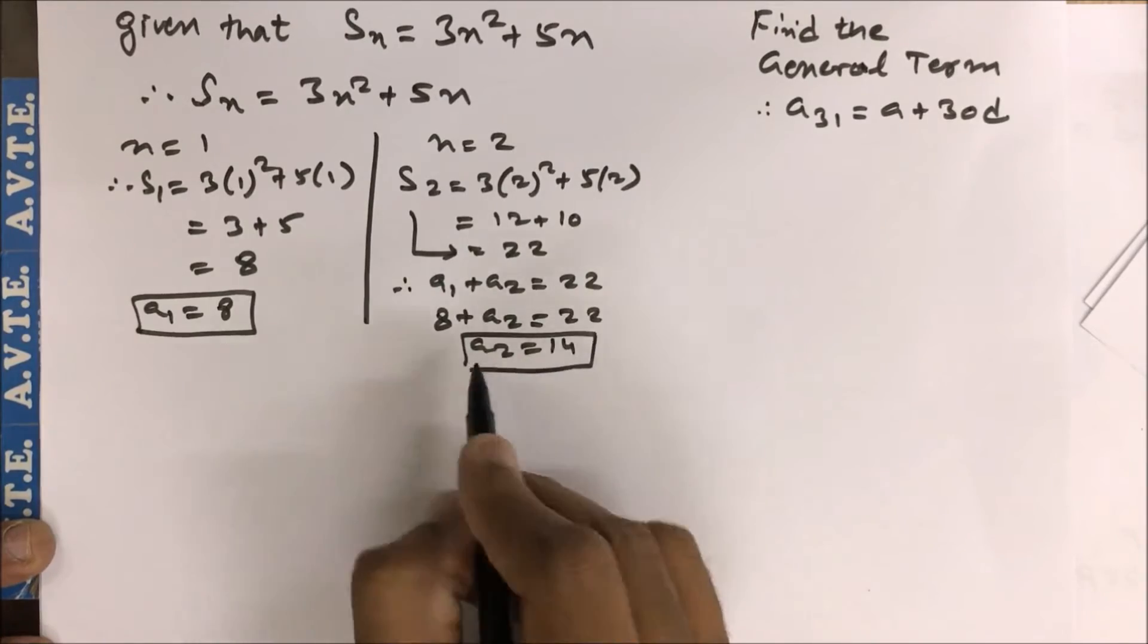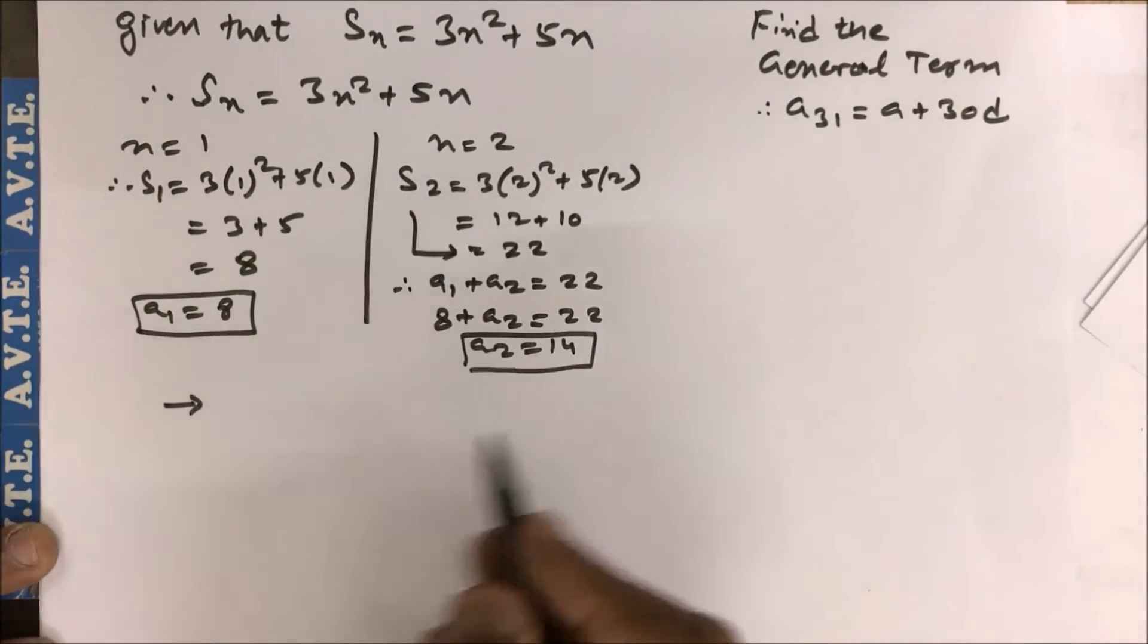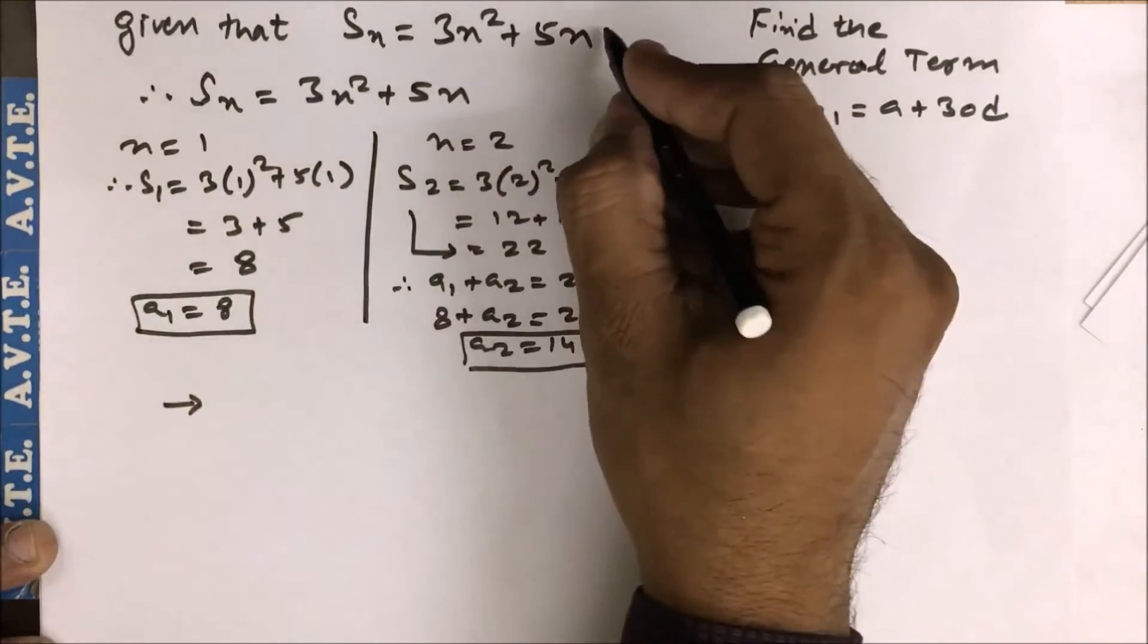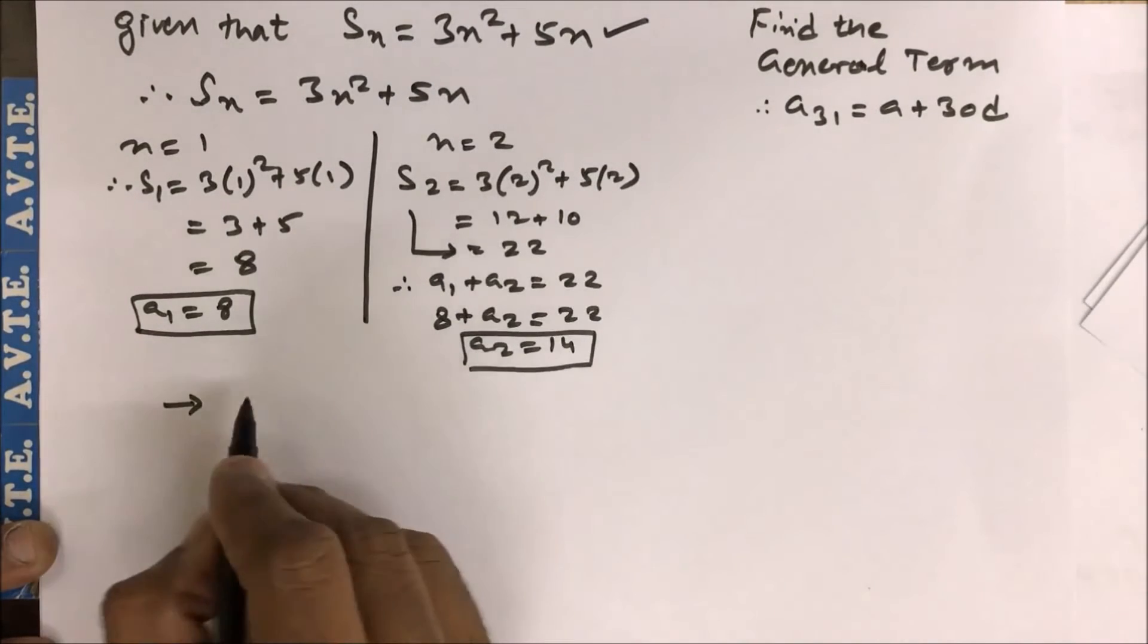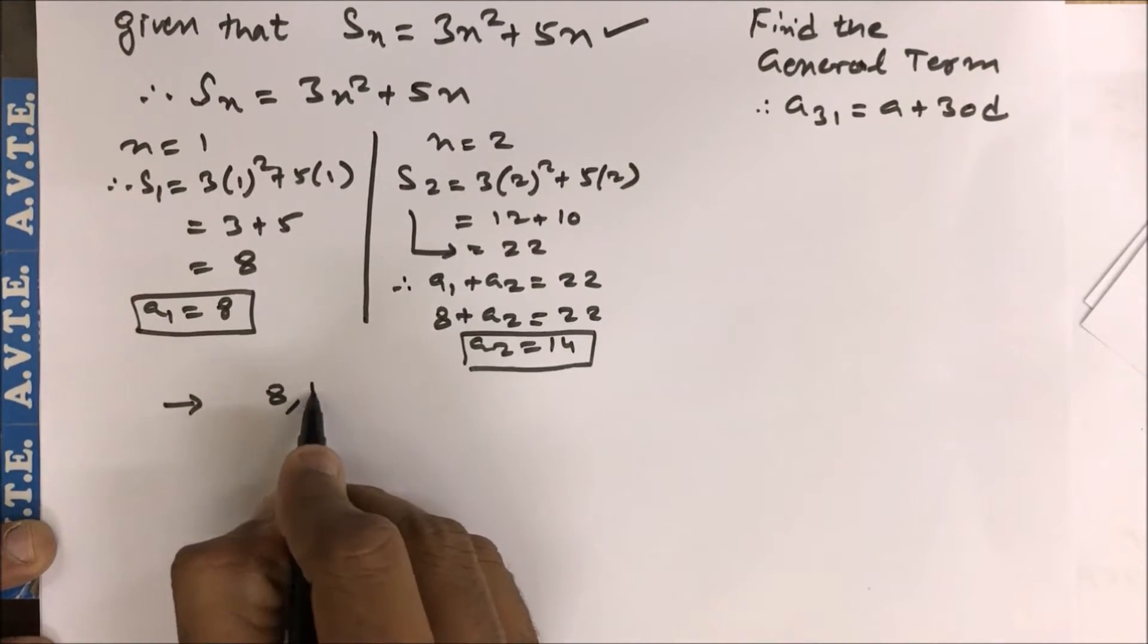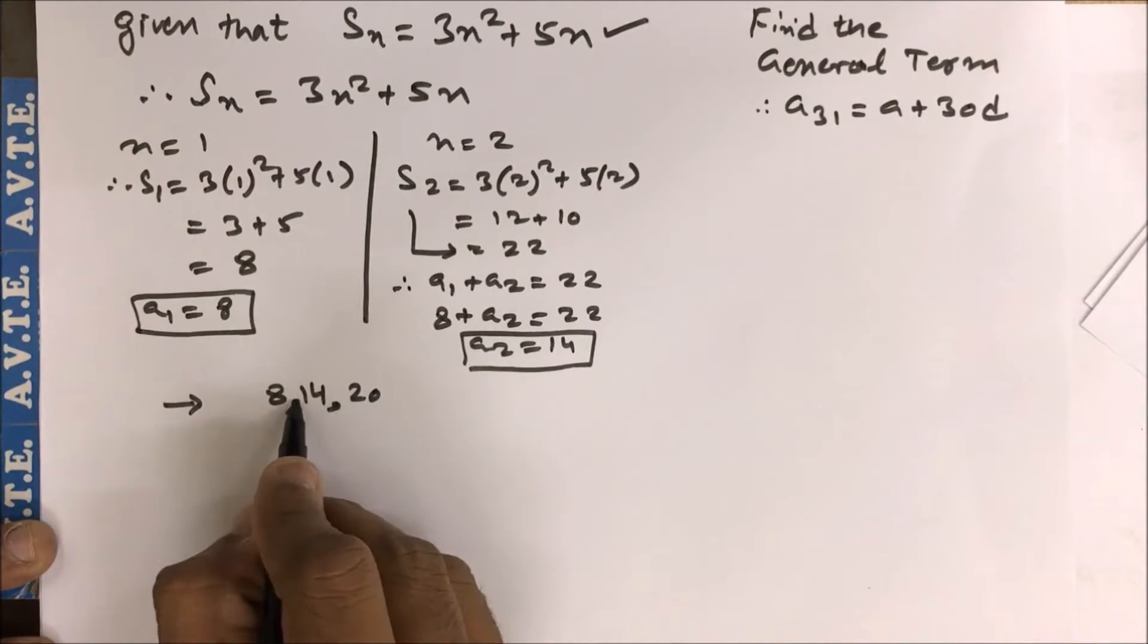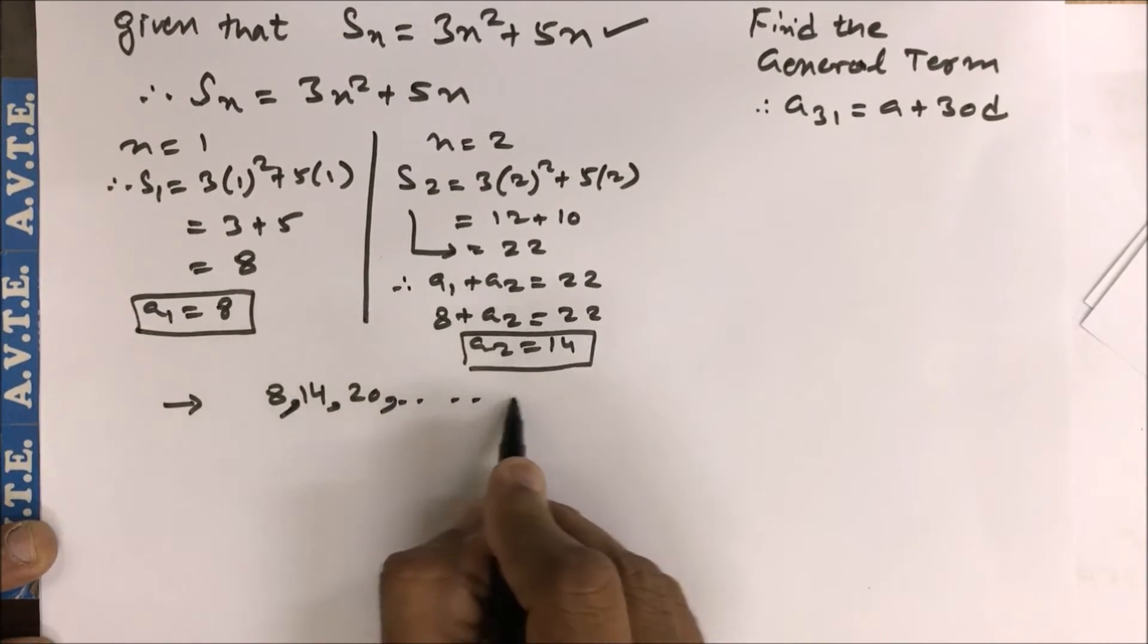So you are given AP. Now you have the AP: 8, 14, with common difference 6, then 20. Your third term should be 20, and so on.